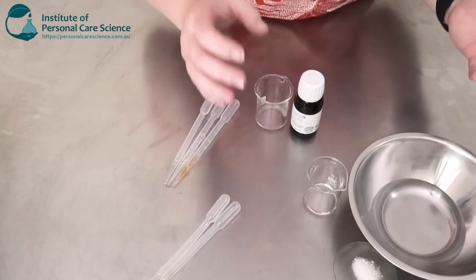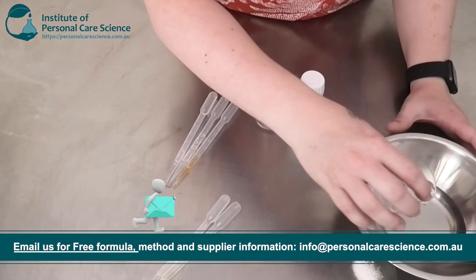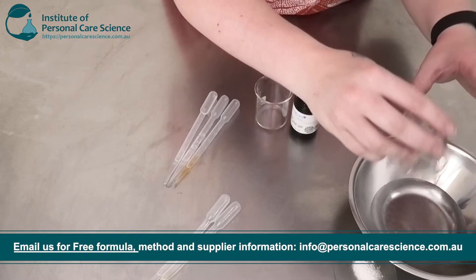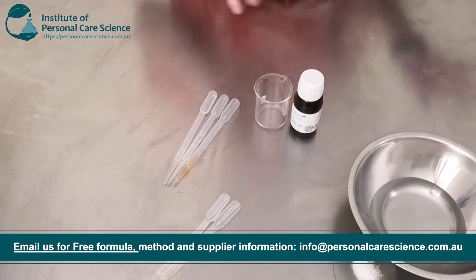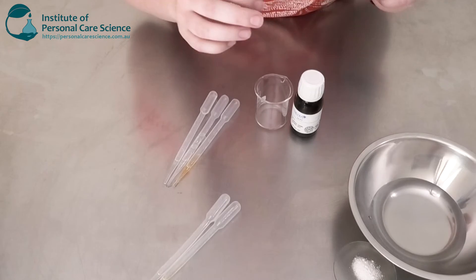So firstly I'm going to put together my phase A ingredients. I've picked a really nice humectant here. I've chosen to go with propane diol because this is non-tacky. Glycerine can be a little bit sticky and tacky depending on input so I'm using propane diol today.